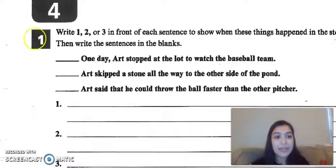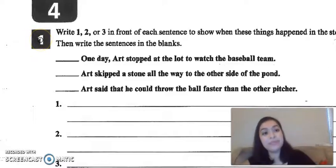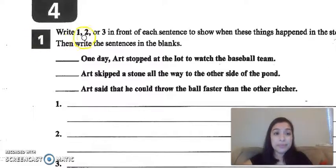Okay, let's look at part one in our worksheet. It says write one, two, or three in front of each sentence to show when these things happened in this story. So we need to figure out what order did they happen in. So everybody, read the first sentence here. Go.